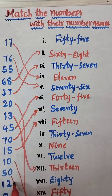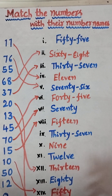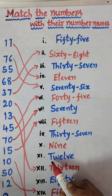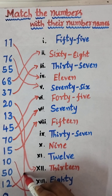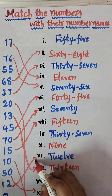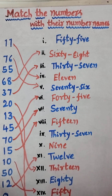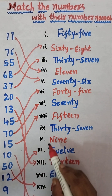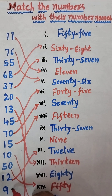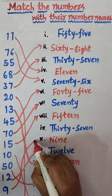Next, 50 — F-I-F-T-Y, fifty. So we match 50 here. Next, 12 — T-W-E-L-V-E, twelve. Match 12 here. Next, the last one is 9 — N-I-N-E, nine. So we match 9 here.